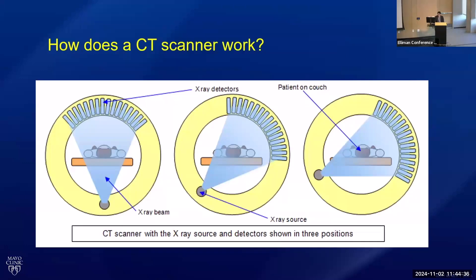I don't want to go too much into the physics. I'm not a physicist, and I have a very rudimentary understanding of all this. But this is basically how a CT scanner works. You go into this tube, laying on a table, and the tube contains x-ray sources on one side and x-ray detectors on the other side. The x-rays are emitted from the x-ray source, they interact with the atoms in the patient, and more x-rays are emitted from the patient and then hit the detector. Based on the information the detector gets, it creates a cross-sectional image of the patient.